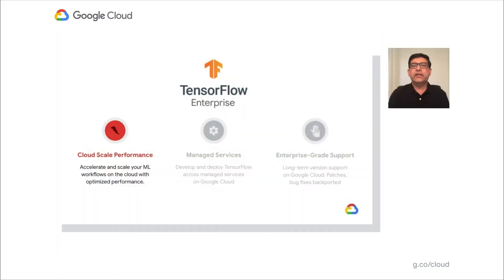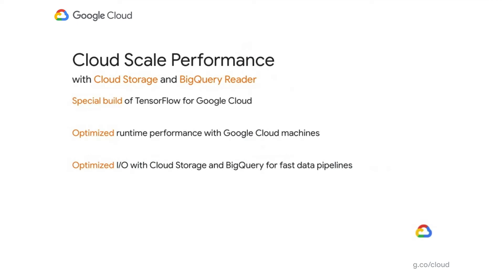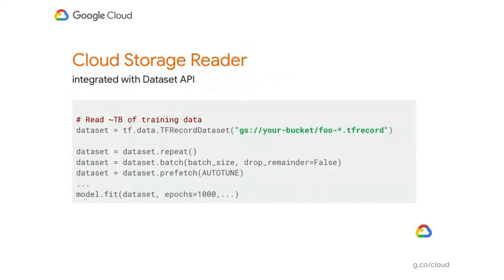Let's start by looking at cloud-scale performance first. With TensorFlow Enterprise, we compile and ship a special build of TensorFlow which is optimized for Google Cloud infrastructure. It is built on open-source TensorFlow, but it contains add-ons with additional runtime optimizations and I/O optimizations specific for Google Cloud machines and services. Here is a code snippet you can use to train a model with potentially a large training dataset in Google Cloud Storage — this code is no different from your typical TensorFlow code written with the tf.data API, except that the path to the files points to your GCS bucket.